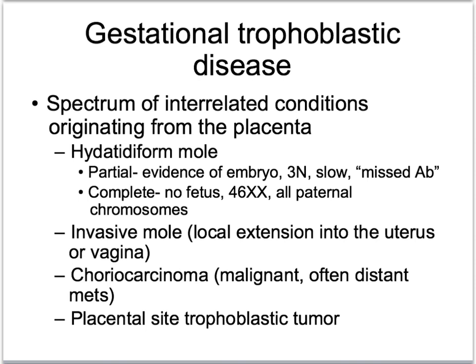Gestational trophoblastic disease includes hydatidiform mole, invasive mole, placental site trophoblastic disease, and choriocarcinoma. All are associated with elevated levels of human chorionic gonadotropin. Approximately 20% of patients will develop persistent trophoblastic disease after evacuation of a molar pregnancy, which requires chemotherapy. Good prognosis disease can be successfully treated with single-agent chemotherapy, while poor prognosis disease requires combination therapy.